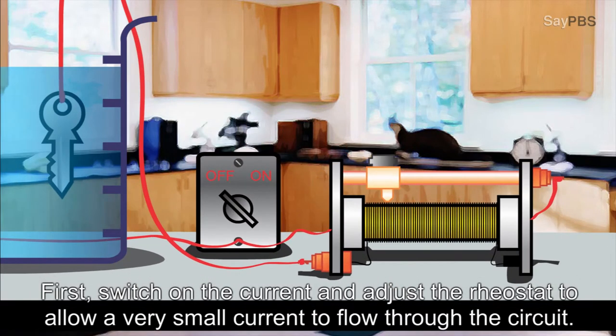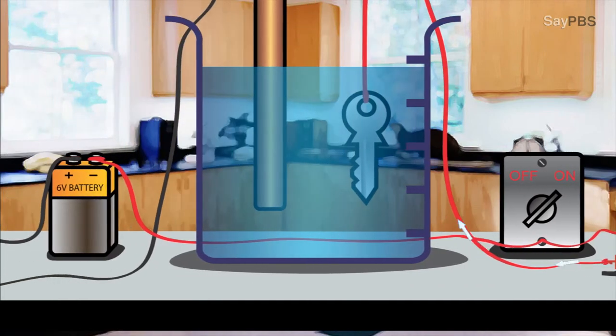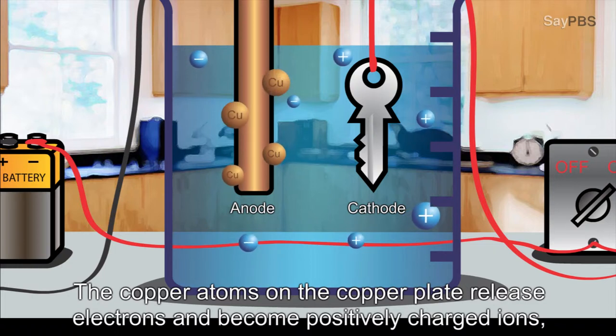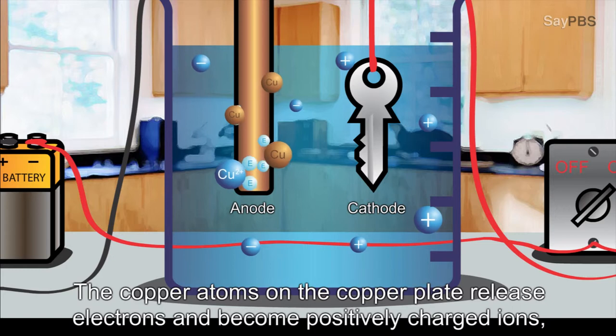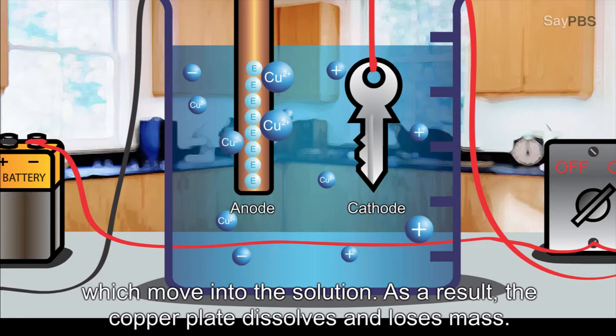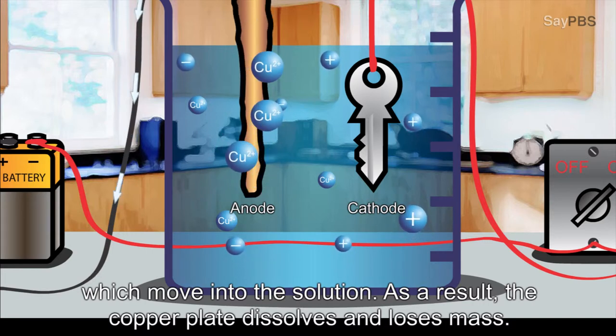First, switch on the current and adjust the rheostat to allow a very small current to flow through the circuit. The copper atoms on the copper plate release electrons and become positively charged ions which move into the solution. As a result, the copper plate dissolves and loses mass.